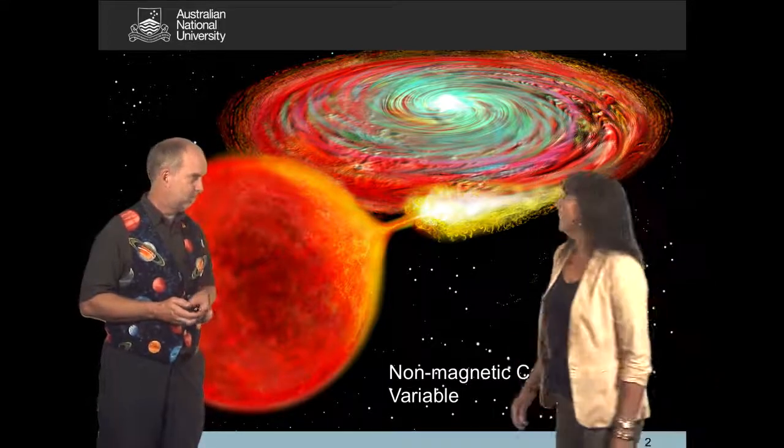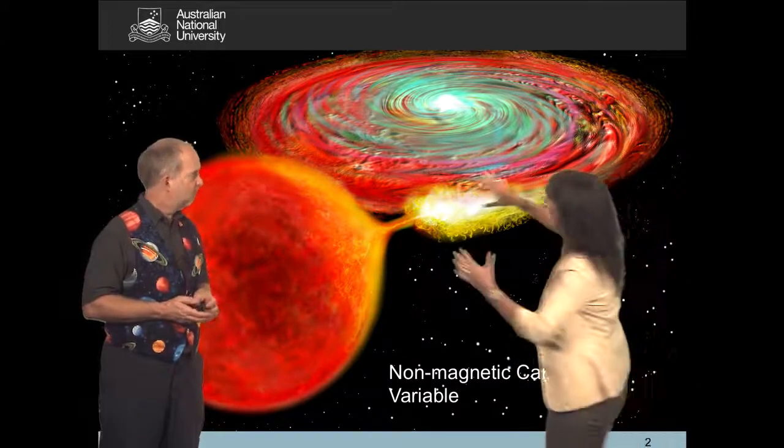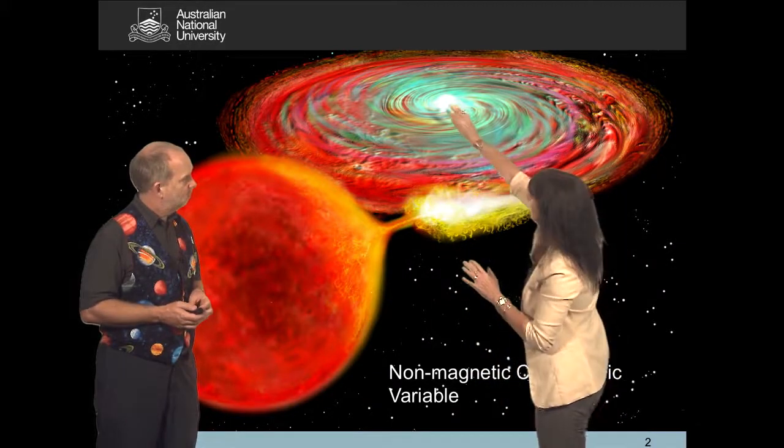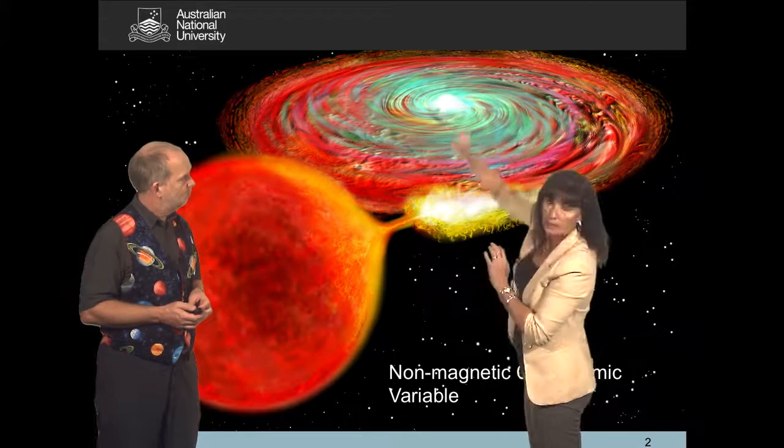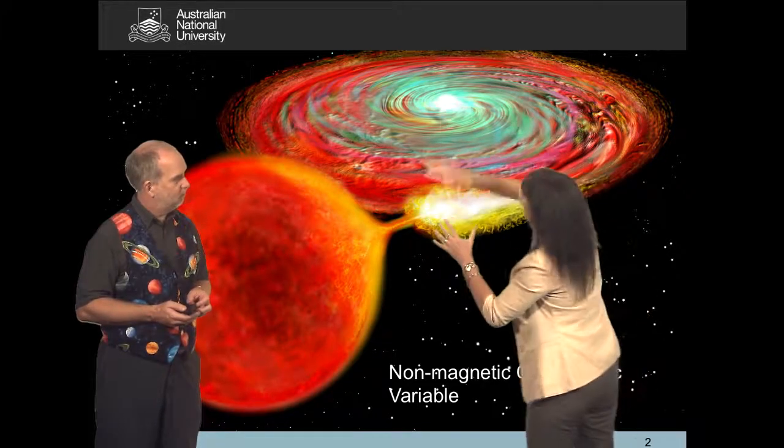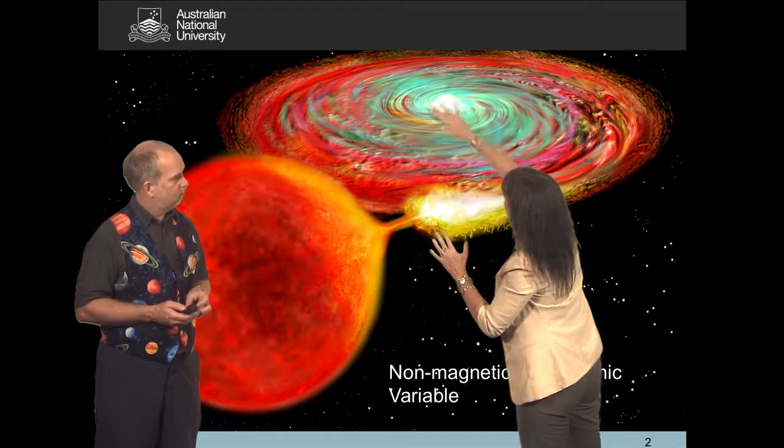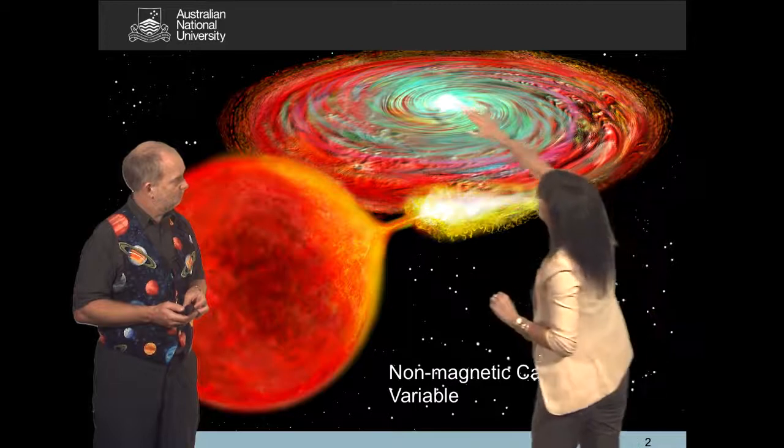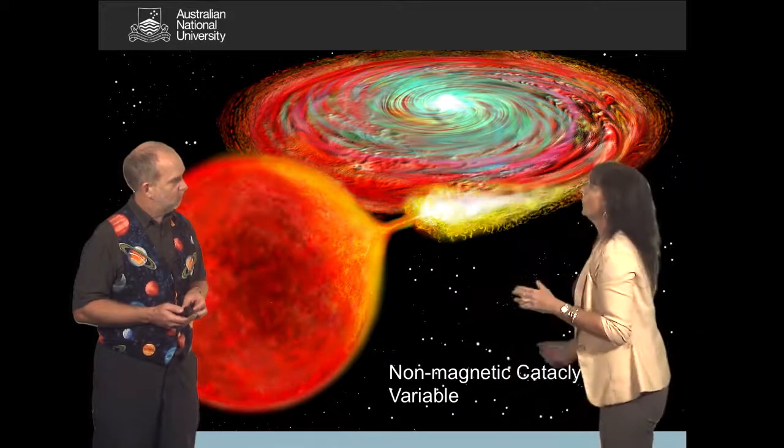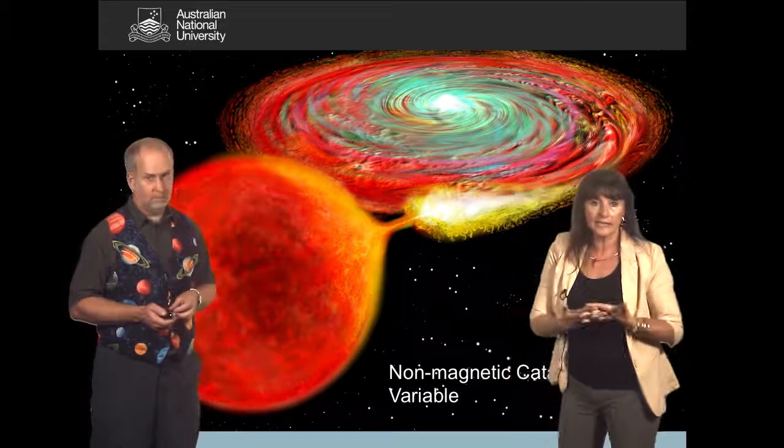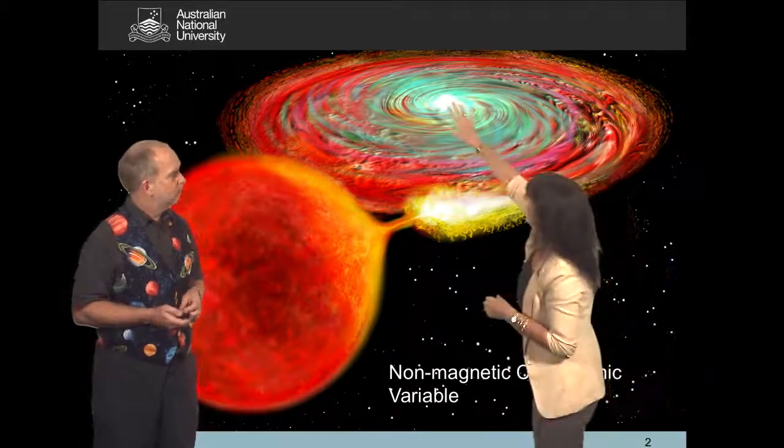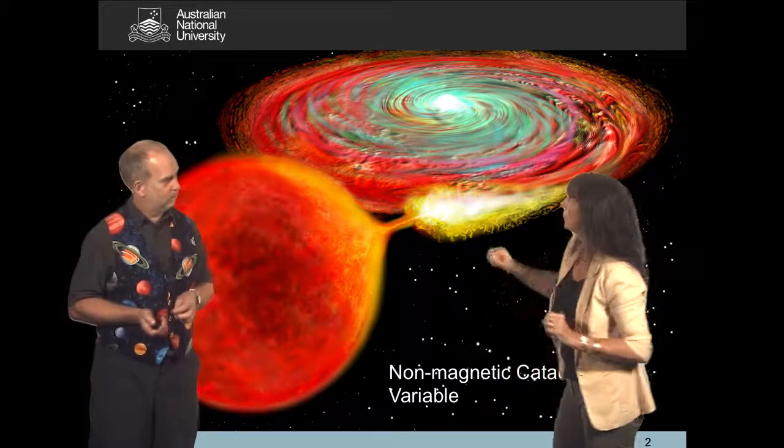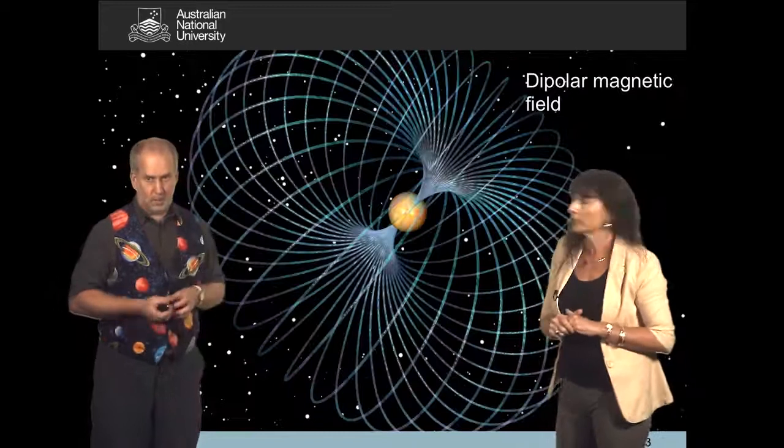Well they are different because as you can see what we have here is a very large accretion disk around this white object here which is the white dwarf. There is accreting matter and here you will have a boundary layer and the accretion disk is coming all the way to the surface of the white dwarf. When the white dwarf is highly magnetic, then the disk is not going to be able to reach the surface of the white dwarf but it will be disrupted by the magnetic field.